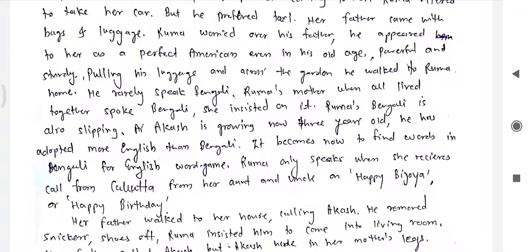He rarely spoke Bengali. Ruma's mother, when all lived together, had insisted on speaking Bengali. Ruma's Bengali was slipping — she could not speak it well. As Akash is now three years old, he has adopted more English than Bengali. It is now difficult to find Bengali words for English word games. Ruma only speaks Bengali when she receives calls from her aunt or uncle in Calcutta — happy Vijaya, happy birthday.